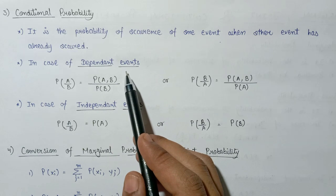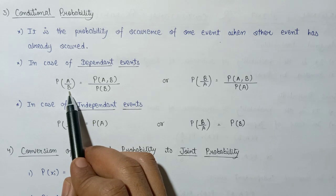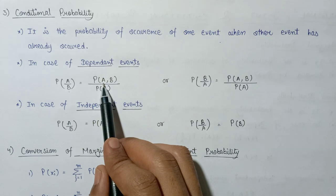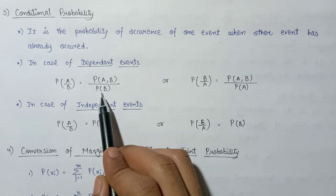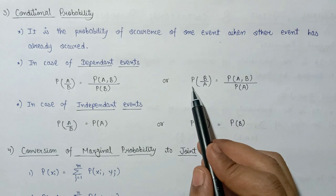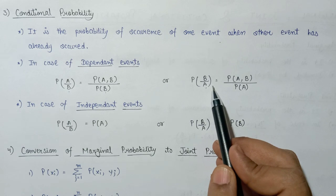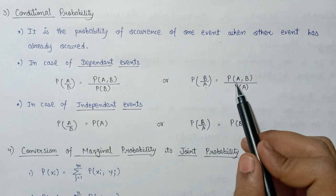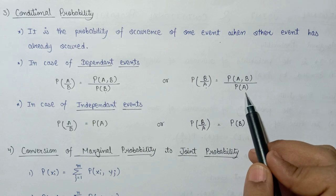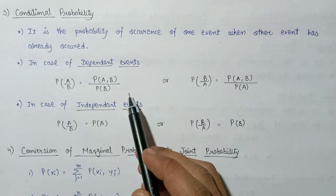In the case of conditional probability, there are also two cases: dependent events and independent events. For dependent events, the conditional probability of event A when event B has occurred equals the joint probability of A and B divided by the marginal probability of B. Similarly, the conditional probability of event B when event A has occurred equals the joint probability of A and B divided by the marginal probability of A.